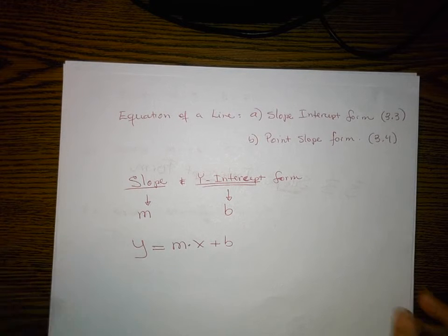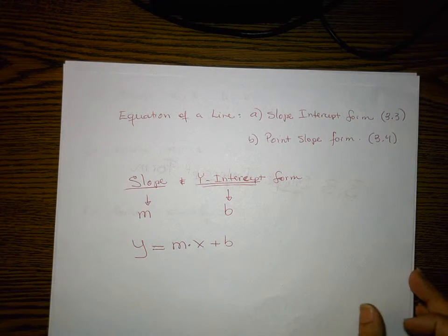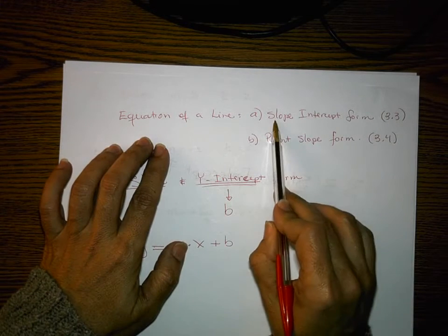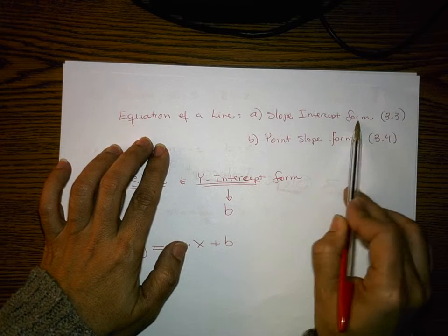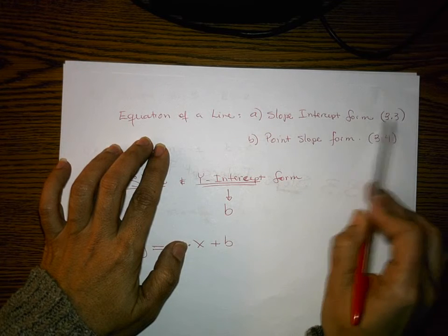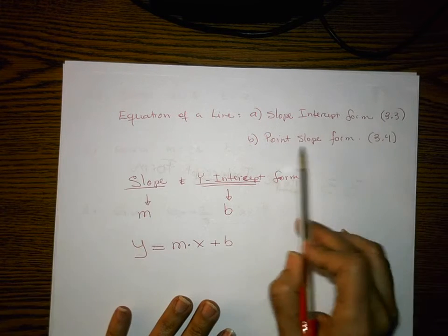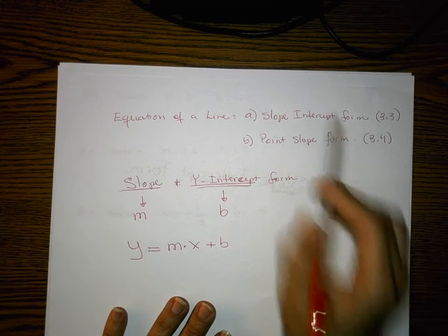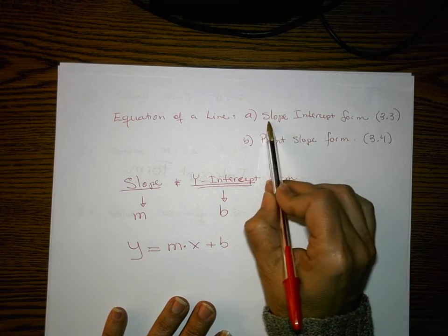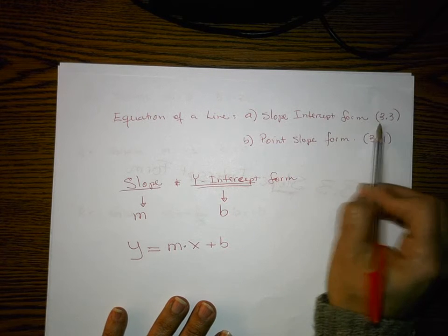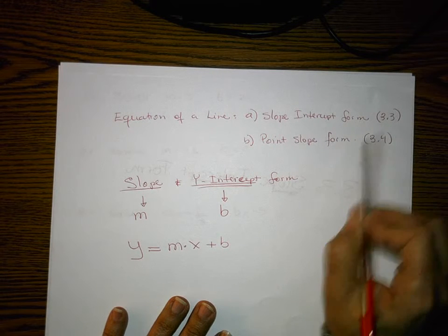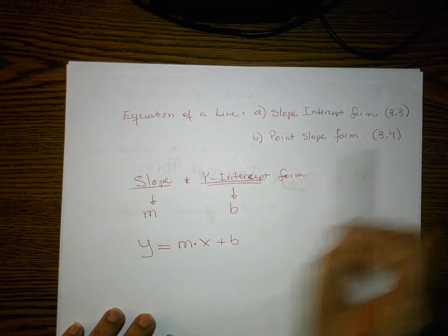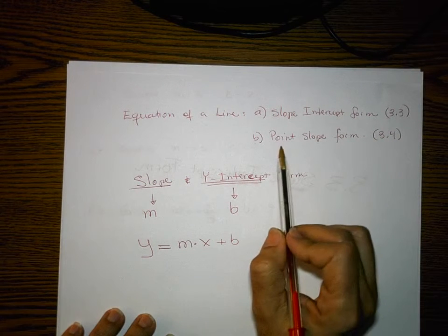There are two ways to write the equation of a line. I can either do it in slope-intercept form, which is what we're learning right now, and then later we'll learn the point-slope form. So let's worry about slope-intercept form because that's this video. Later, check out video 3.4.